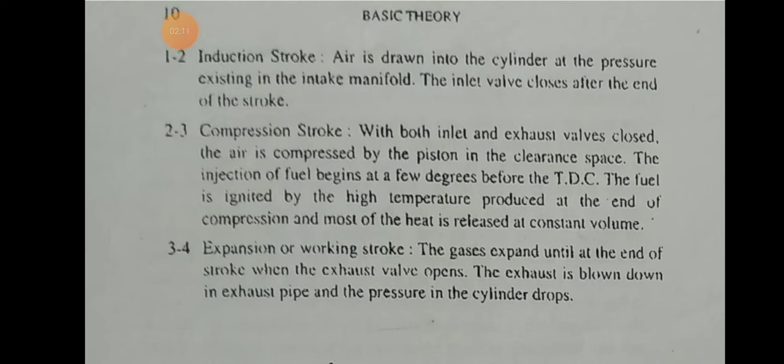During the compression stroke, with both inlet and exhaust valves closed, air is compressed by the piston in the clearance space. A few degrees before TDC, fuel injection begins. The fuel is ignited by the high temperature — pressure reaches 40 to 60 bar and temperature reaches 600 to 700 degrees. At the end of combustion, most of the heat is released at constant volume.